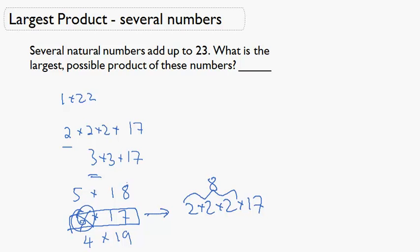You would also never, ever use a 5, because 5 is equal to 2 plus 3, but 2 times 3 is equal to 6, which is bigger than 5. So, you would never use a 5.